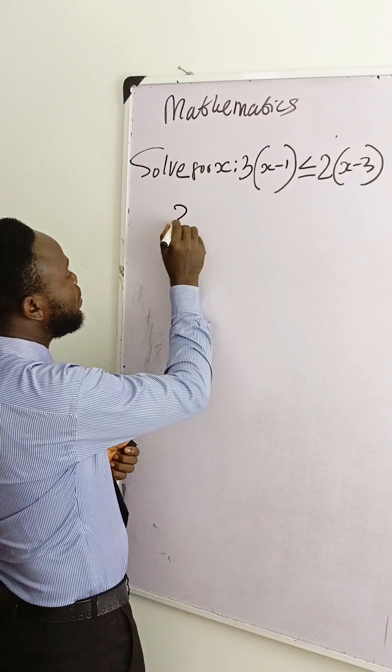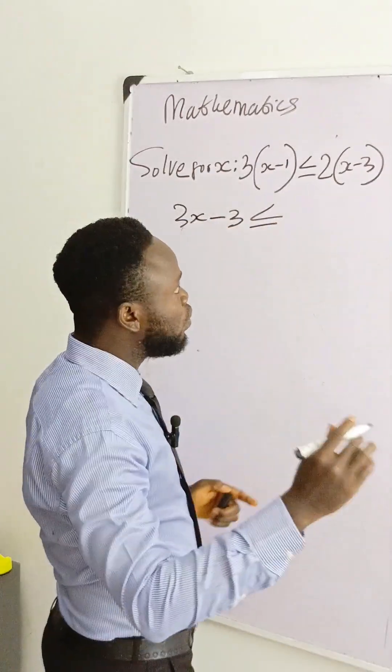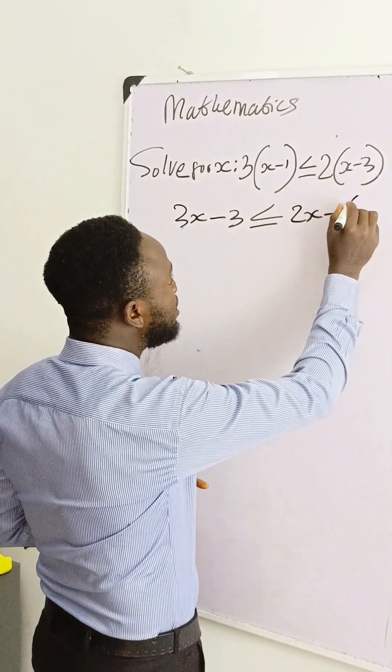We have 3 times x, we have 3x minus 3, is less than or equal to 2 times x will give you 2x minus 2 times 3 is 6.